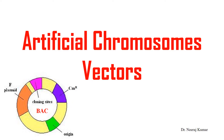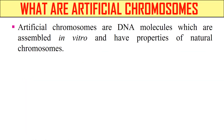Hello everyone, I am Dr. Neeraj and today's topic is Artificial Chromosome Vectors. So without any delay, let's move to the video. First of all, what are artificial chromosomes? These are DNA molecules which are made in the lab, and they behave like a natural chromosome. They are made in the lab with the properties of natural chromosomes, and that's why these are called artificial chromosomes.